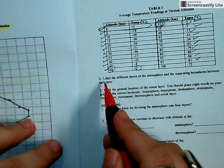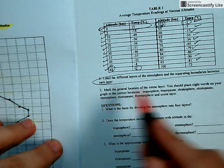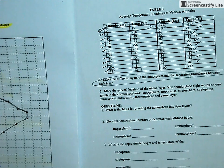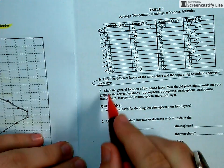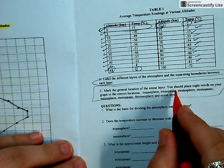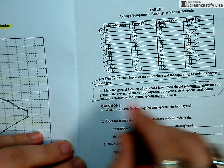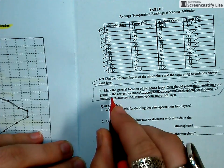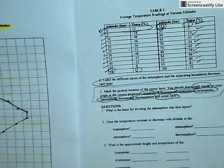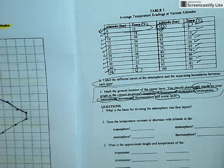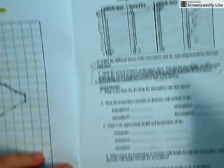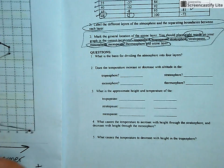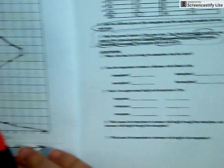And so the steps, it says label the different layers of the atmosphere and the separating boundaries between each layer. And so I have about a minute. So it says mark a general location of the ozone layer, and it says you should place eight words on your graph in the correct location. So troposphere, tropopause, stratosphere, tropopause, mesosphere, mesopause, thermosphere, and ozone layer. So you do need to label those and then answer these questions and have me check it so you can go on the next step of your playlist.